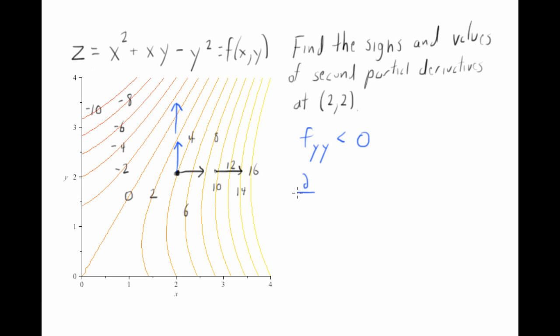Again, we'll check that. Del del y of x squared plus xy minus y squared is x minus 2y. And if I take del del y of del z del y, I will get negative 2. So that checks out. Great.